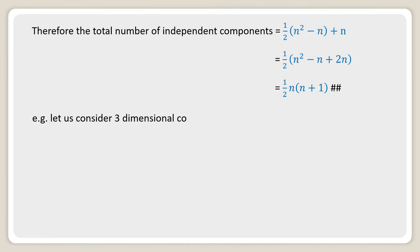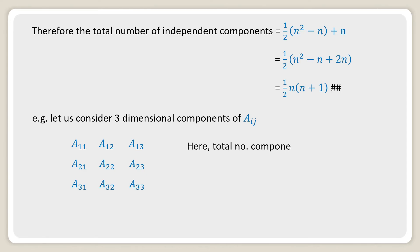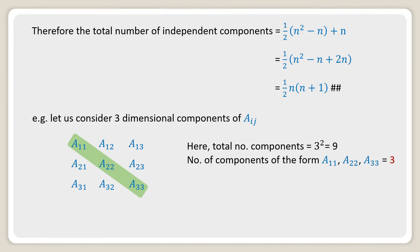For example, consider the three-dimensional components of a_ij: a₁₁, a₁₂, a₁₃, a₂₁, a₂₂, a₂₃, a₃₁, a₃₂, a₃₃. The total number of components is 3² = 9. The number of diagonal components of the form a₁₁, a₂₂, a₃₃ is 3. The number of non-diagonal components is 3² − 3 = 9 − 3 = 6.